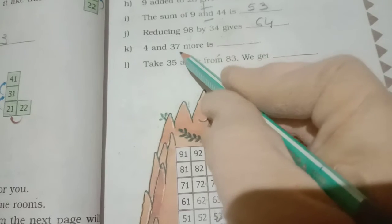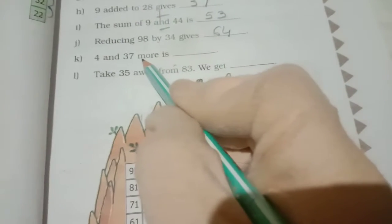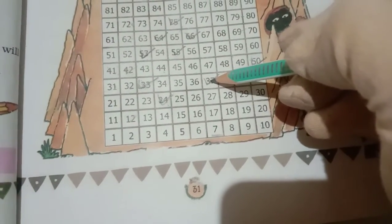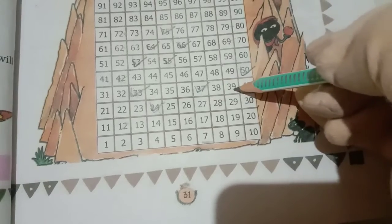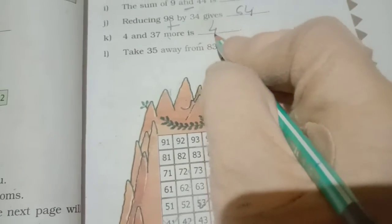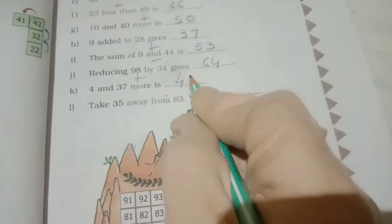4 and 37 more. More means plus. So 37, that we move 4 steps. 1, 2, 3, 4. So answer will get 41.